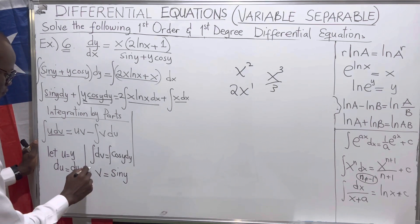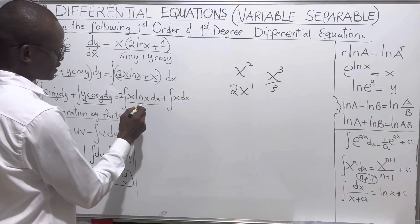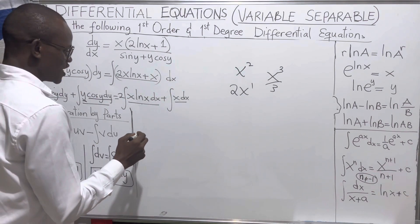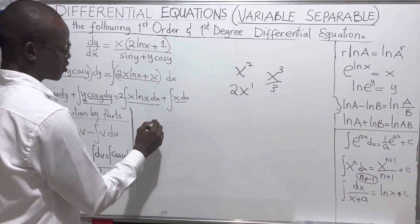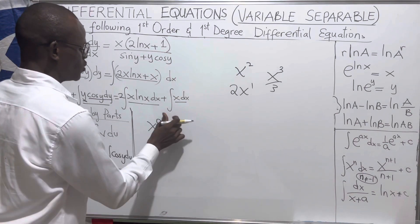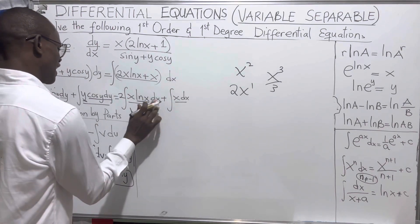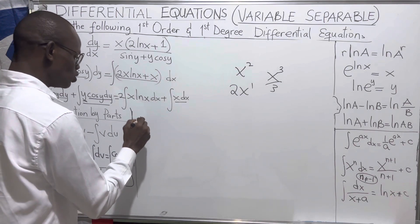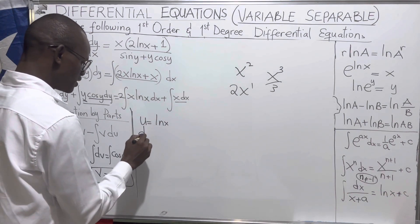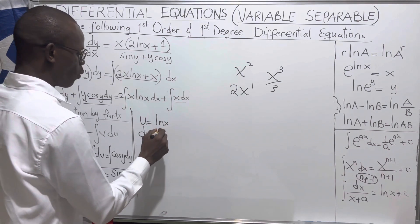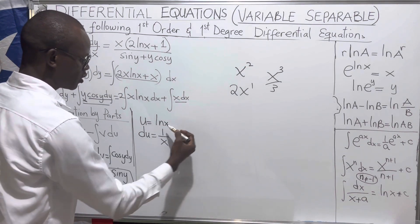Integrating both sides: v equals sin(y). For the second integral, x·ln(x), we cannot easily integrate ln(x), so we let u equal ln(x). The derivative of ln(x), which is du, equals 1/x dx.